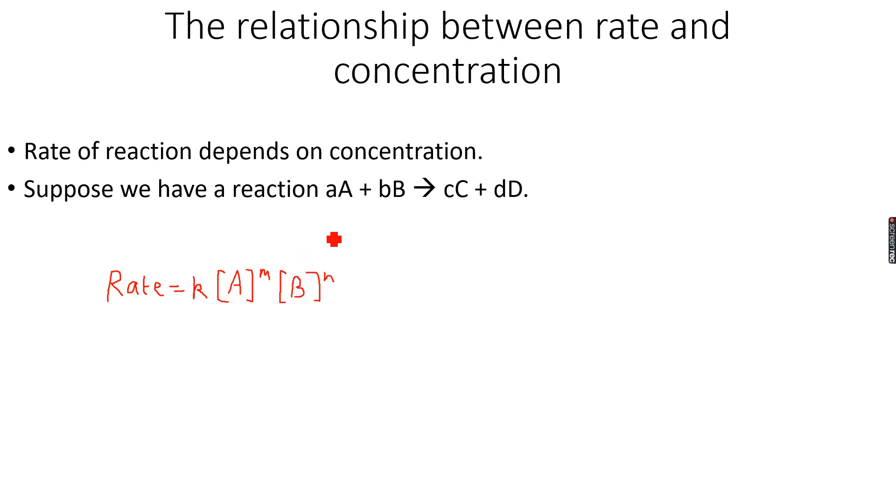Now you must be thinking that is m equal to small a and is n equal to small b? Well, the answer is not necessarily. For example, if A is 2 and B is 1, m can be 1 and n can be 1, m can be 2 and n can be 1, m can be 0 and even n can be 0. Anything like this can happen.